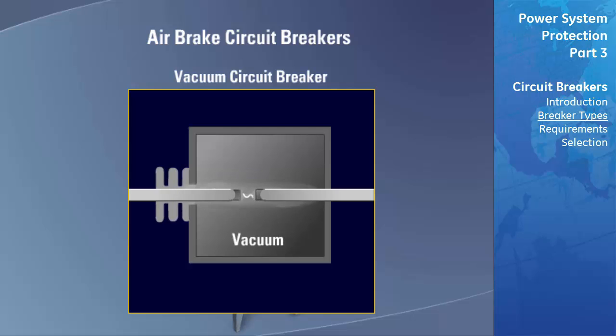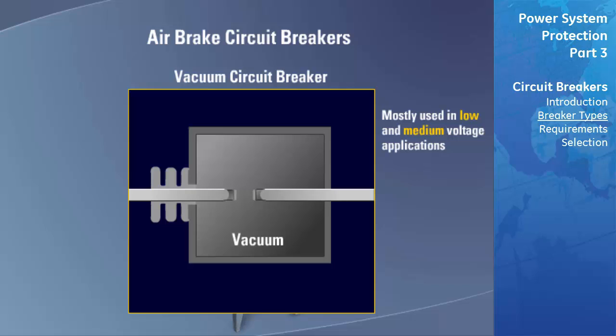A vacuum circuit breaker utilizes a vacuum to extinguish arcing when the breaker is opened and to act as a dielectric to insulate the contacts after the arc is interrupted. Vacuum circuit breakers are mostly used in low and medium voltage applications. Due to the high dielectric strength of a vacuum, the interrupters and gap between contacts are small, and the sealed interrupting chamber is made of porcelain.